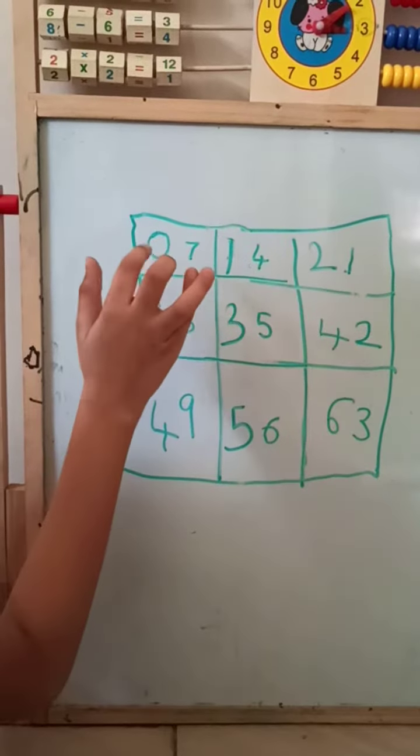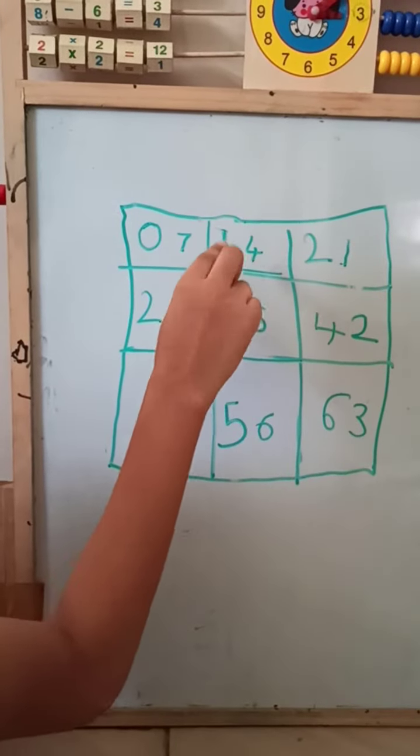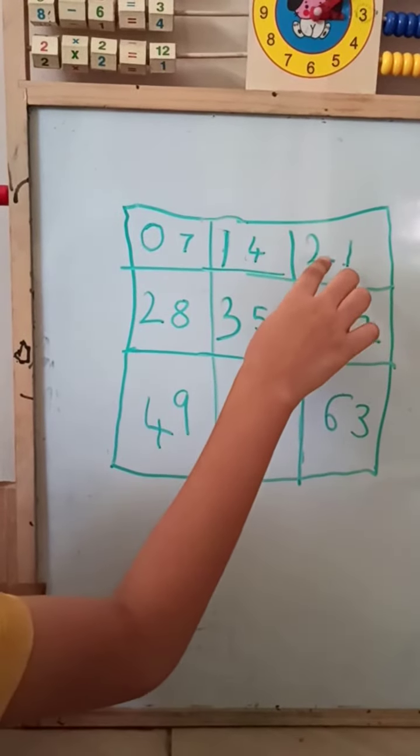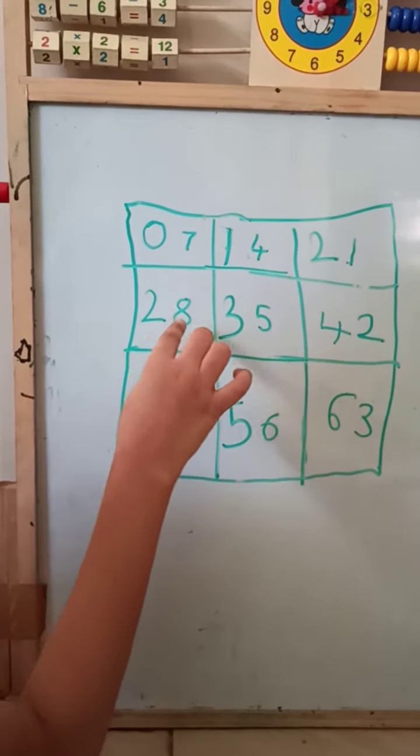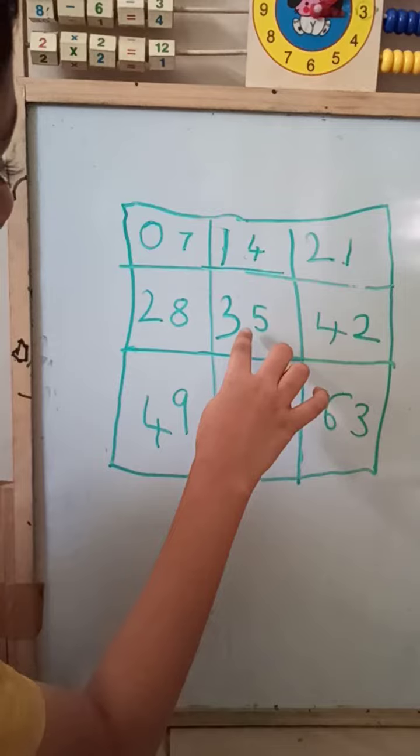Seven one's a seven, seven two's fourteen, seven three's twenty-one, seven four's twenty-eight, seven five's thirty-five.